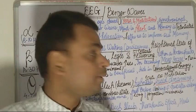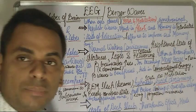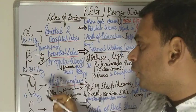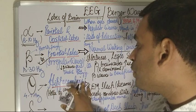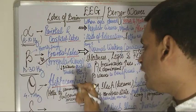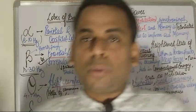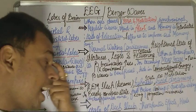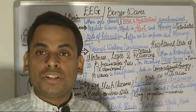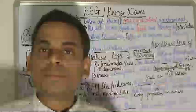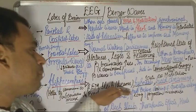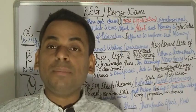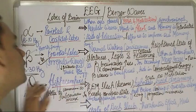Moving on to theta waves: theta waves have a frequency range of 4 to 7 hertz and are produced from the hippocampus of the brain. Theta waves are produced when the mind is disappointed — particularly when children get disappointed. They are also seen during rapid eye movement (REM) sleep, where vivid dreaming occurs, and also in the state of hypnosis and lucid dreaming.